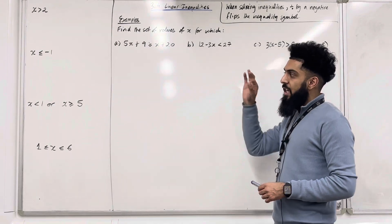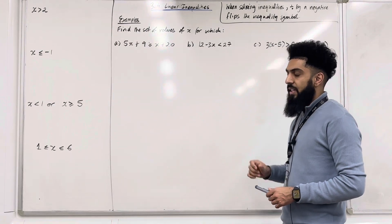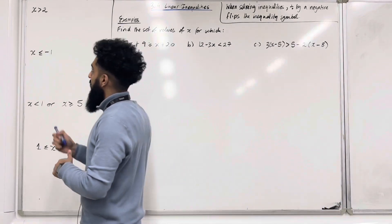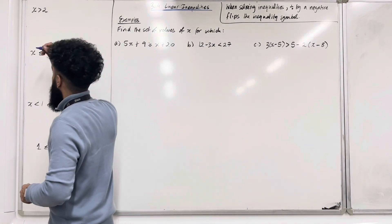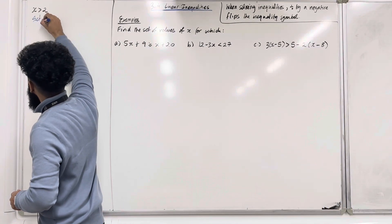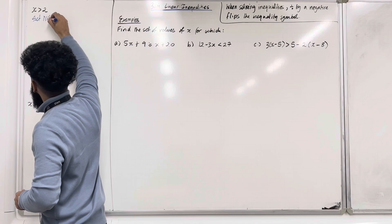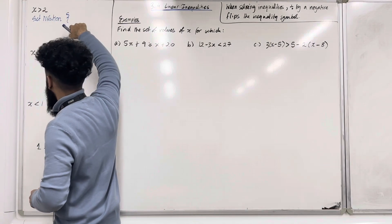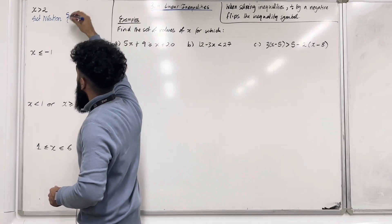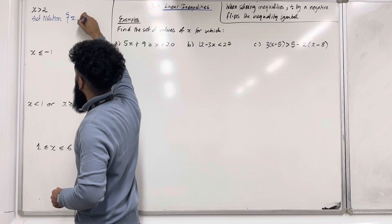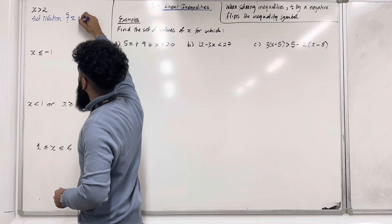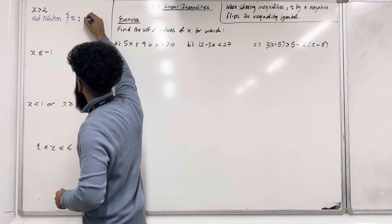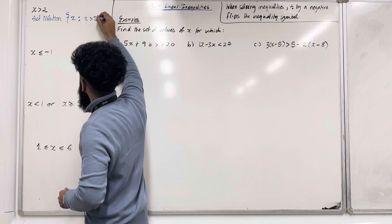I'm going to rewrite each of these inequalities in set notation. Let's start off with the first one: X is greater than 2. So we have a special curly bracket — the set of values of X such that the restriction is X is greater than 2.